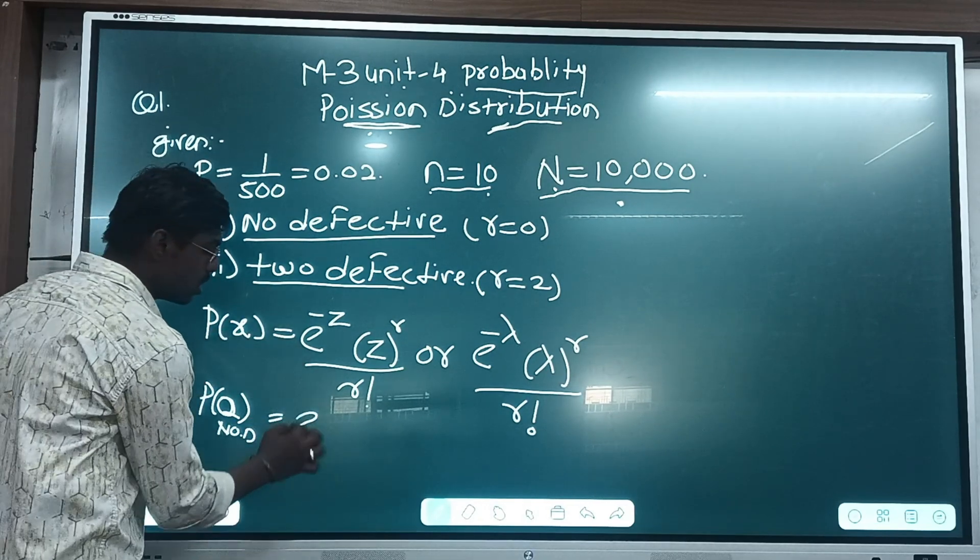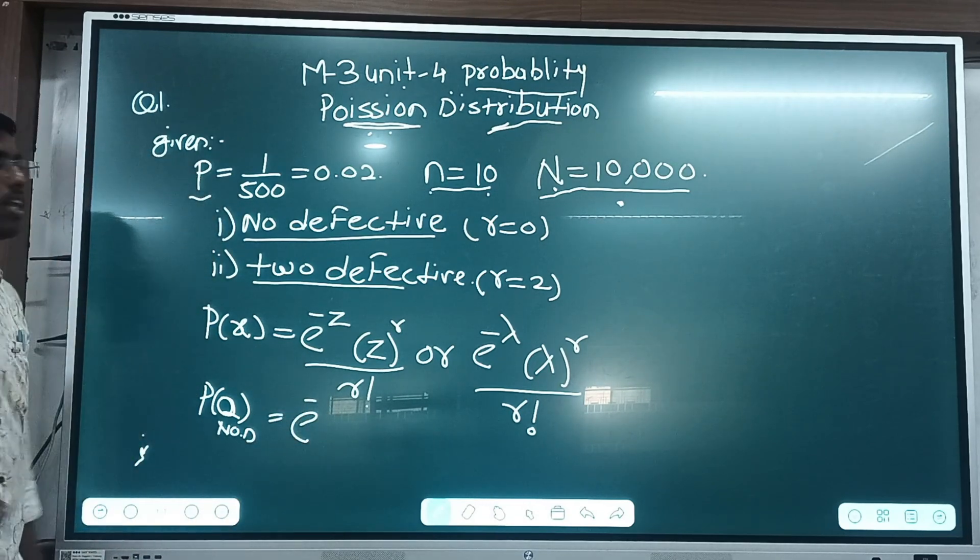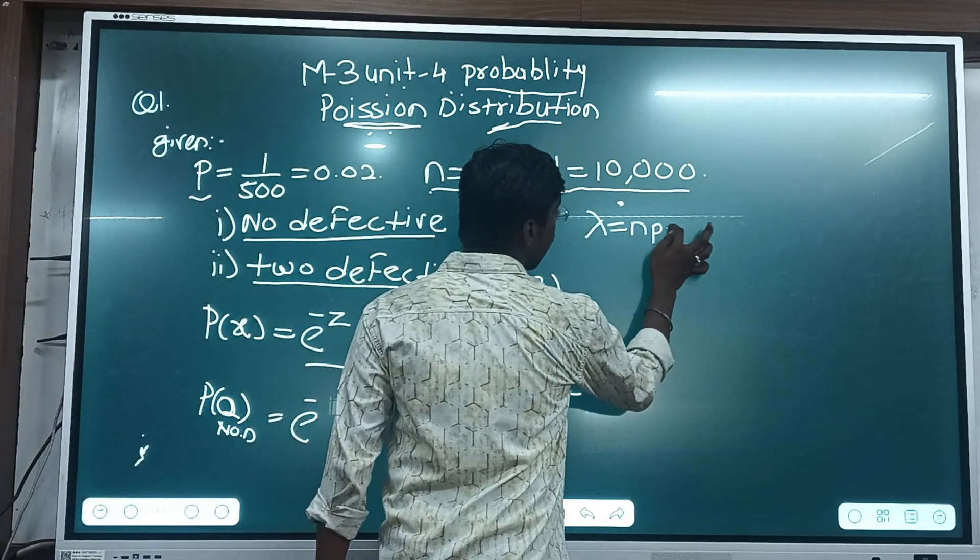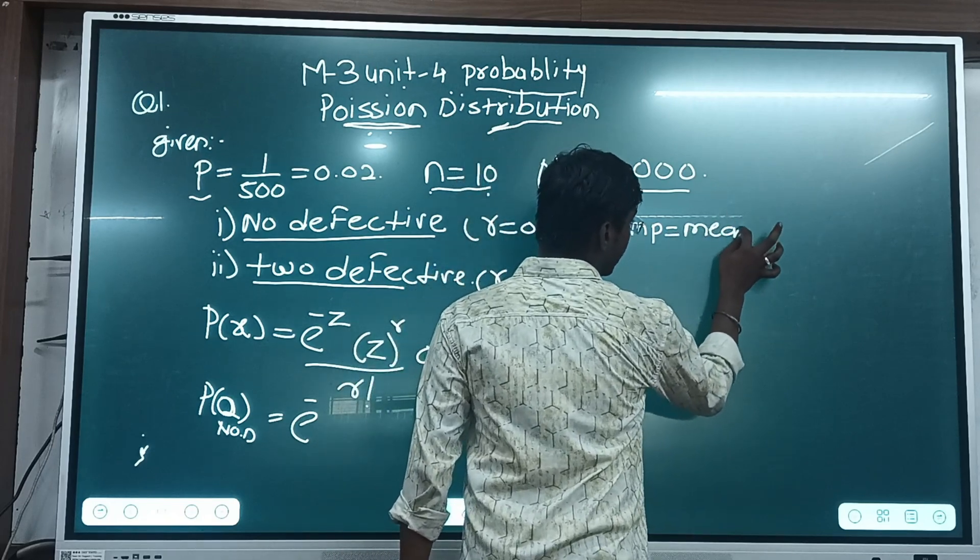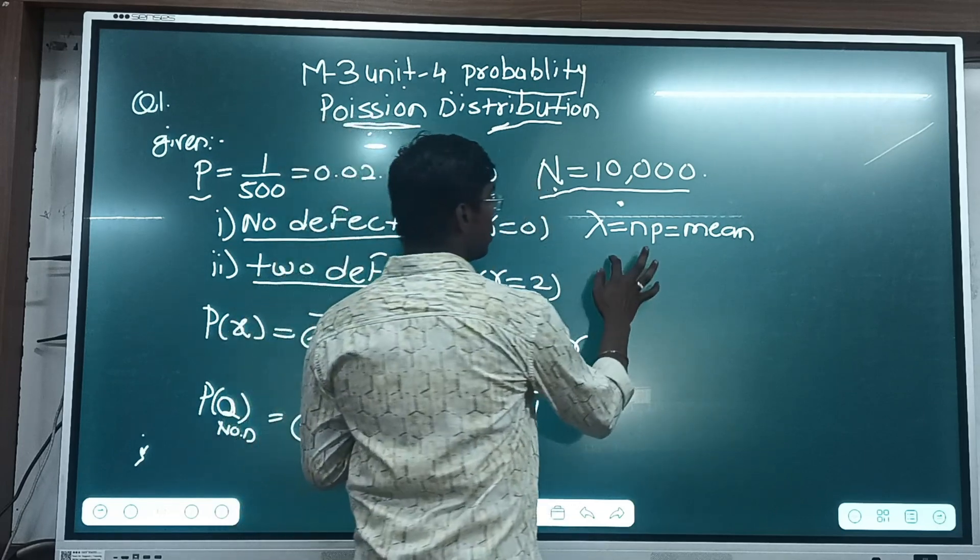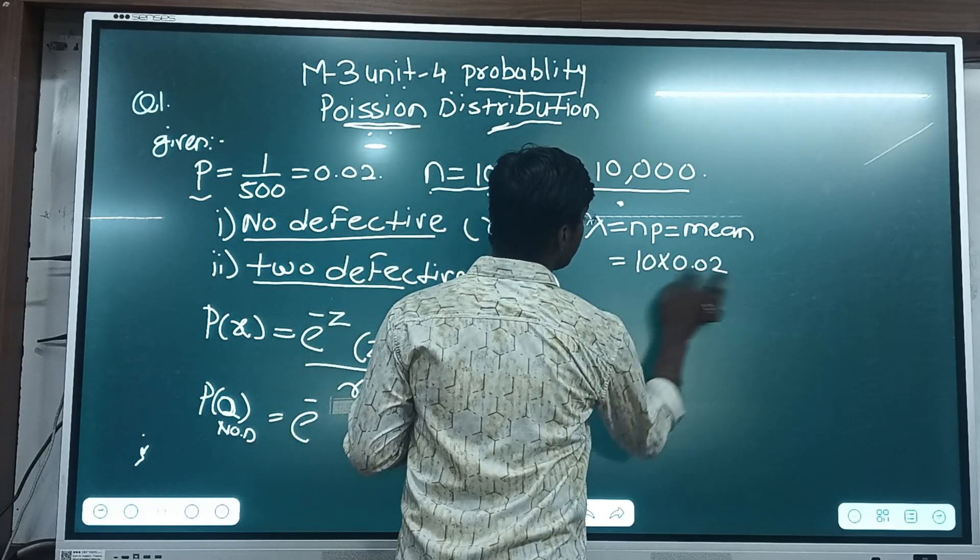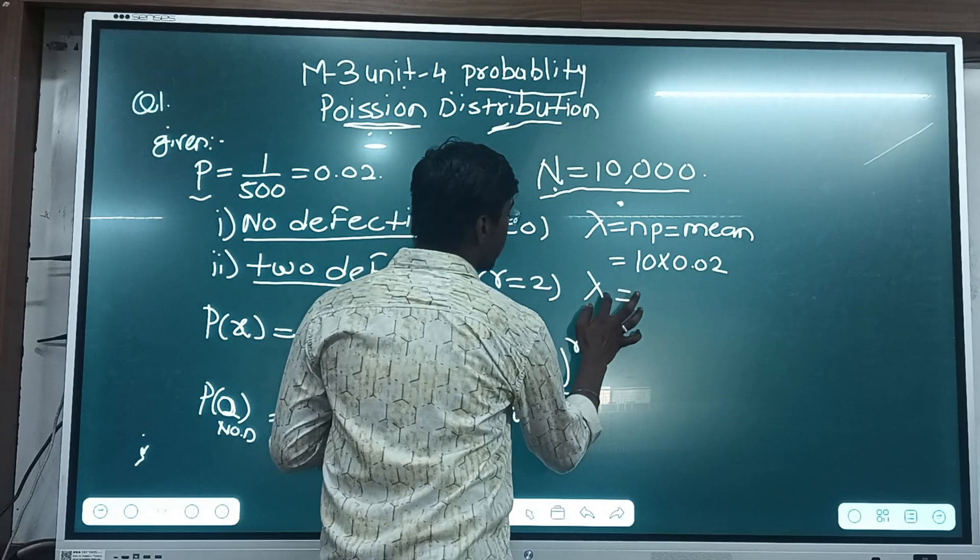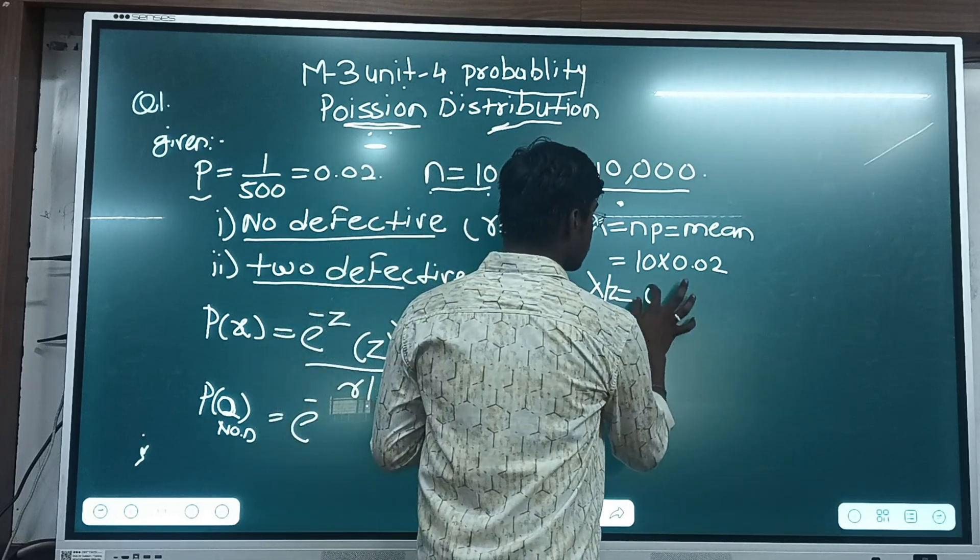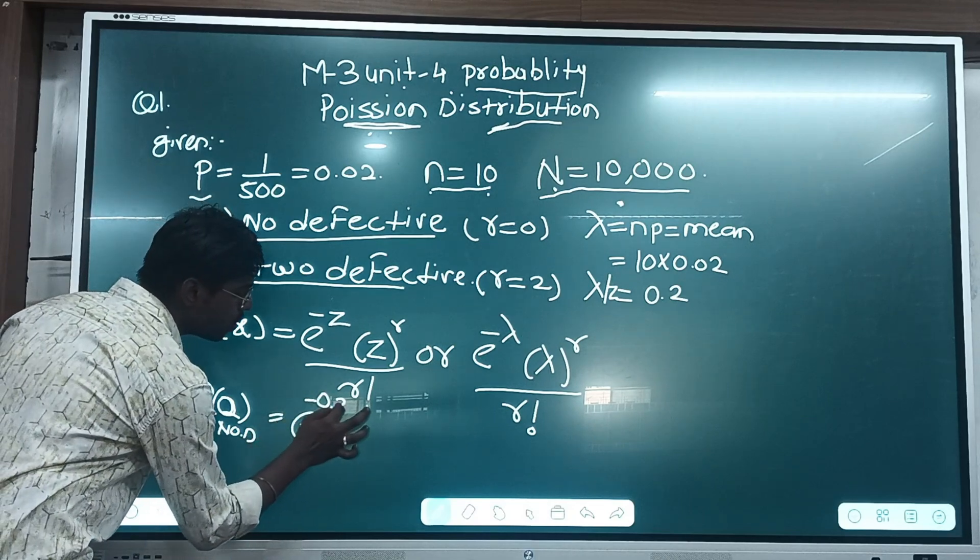So e, as it is. The z value is, what is the z value? The z value is not given in the question. For determination of z value, lambda is equal to n into p, or it is also known as mean. What is n value? The n is nothing but 10, and p is 0.02. So lambda or z is nothing but 10 into 0.02. This is 0.2.